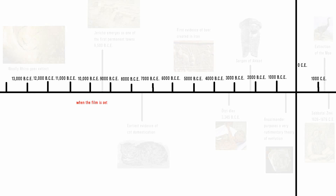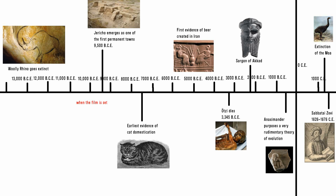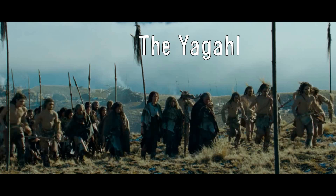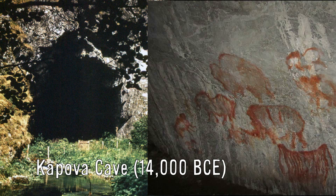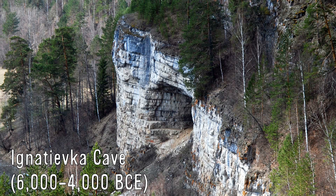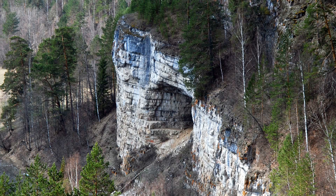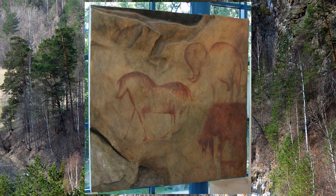10,000 BCE starts out in what we can assume is 10,000 BCE, at the end of the Upper Paleolithic period and the beginning of the Mesolithic, with a tribe of Homo sapien hunter-gatherers called the Yagal, living in what appears to be the Ural Mountains or maybe East Siberia. Both these possibilities are accurate - modern humans have been living in the Urals for about 75,000 years, and several archaeological sites like Kapova Cave and the Ignatieva Cave illustrate these humans lived in the region both before and after 10,000 BCE, and often depicted the wildlife that existed there.